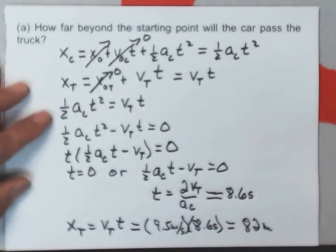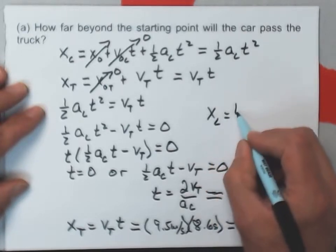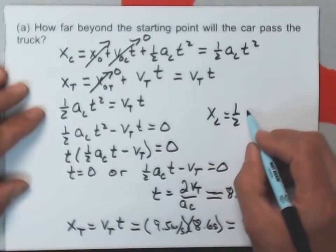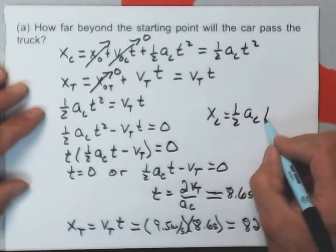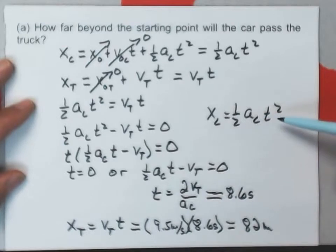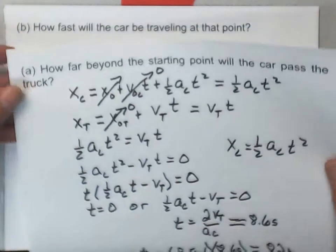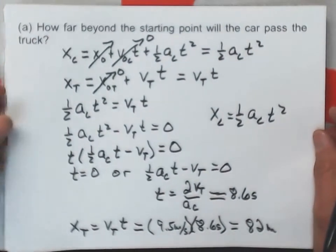By the way, the other way to do that would have just been to use the position of the car. One half the acceleration of the car times T squared. And I think you'd find that if you plugged in the acceleration of the car and the 8.6 seconds squared here you'd get the same value there. Possibly a little differing in the last significant figure. So that's how far it takes for the car to catch the truck.